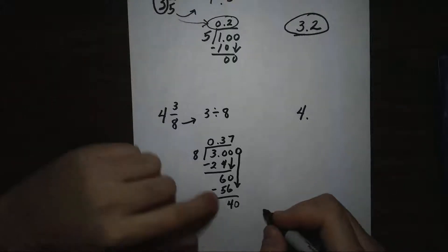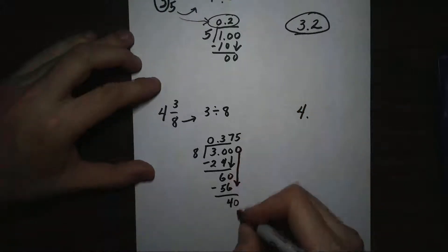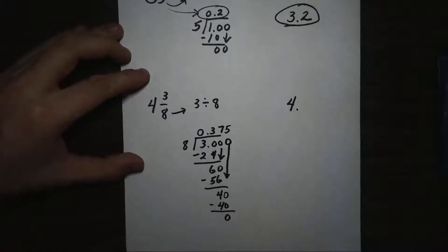Does 8 go into 40? Yes, it does. Five times, and there we go. My decimal no longer has a remainder. So my decimal has stopped. So there is 3/8 as a decimal.